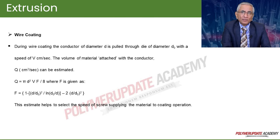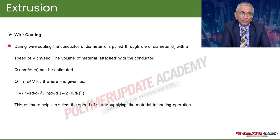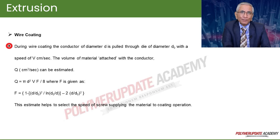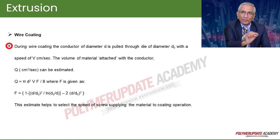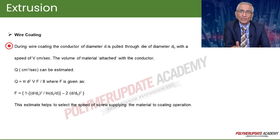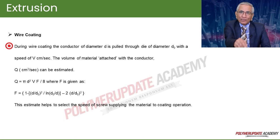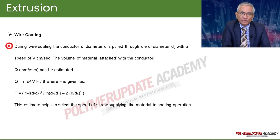Now we can go for wire coating, which is a separate operation after the extruder. During wire coating, the conductor of diameter d is pulled through a die of diameter d0 with a speed of v centimeters per second. The volume of material attached to the conductor, let's say q, can be estimated by the formula shown here.